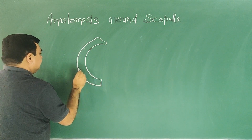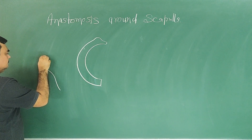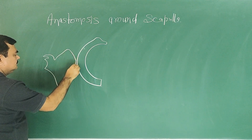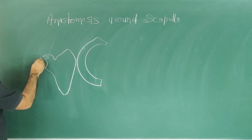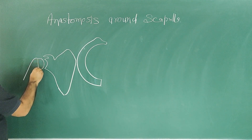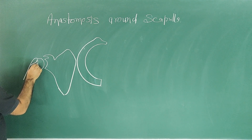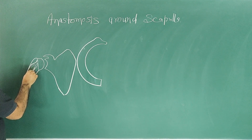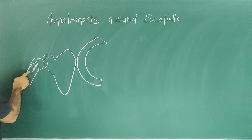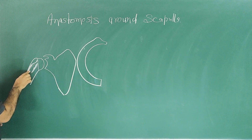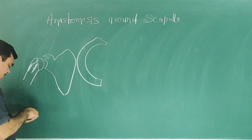This is the scapula. This is the clavicle. This is the humerus. This is the greater tubercle, lesser tubercle. This groove is the bicipital groove.